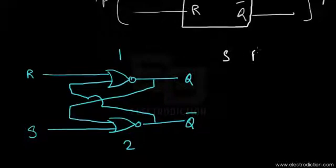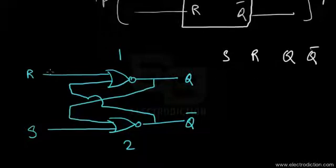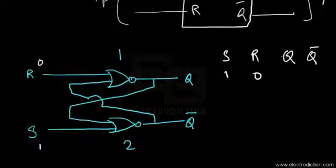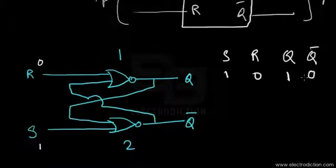Now let me explain how the circuit works using the truth table. Whenever the S input is set to logic one and R is set to logic zero, the Q output will be set to logic one, and Q-bar — being the complement of Q — will be set to logic zero.